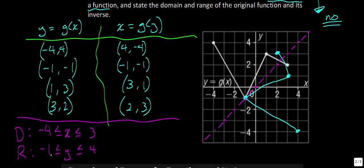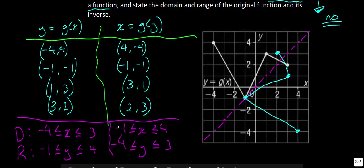How did that change for the relation we now have? For x, we have values from −1 to 4. So x must be less than or equal to 4 and greater than or equal to −1. And for the range, the biggest value is 3 and the smallest is −4. The interesting thing to note is that the domain of the original becomes the range of the inverse, and vice versa — because we've just switched our ordered pairs.